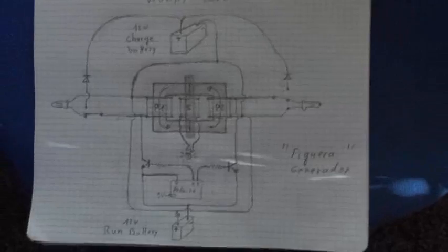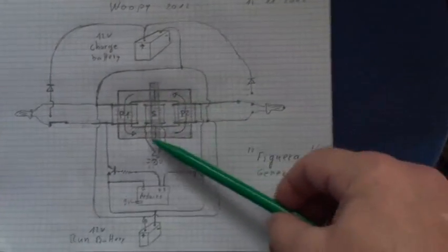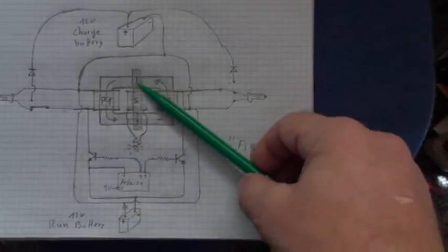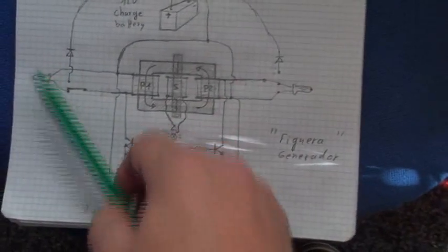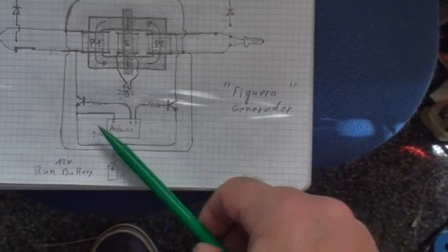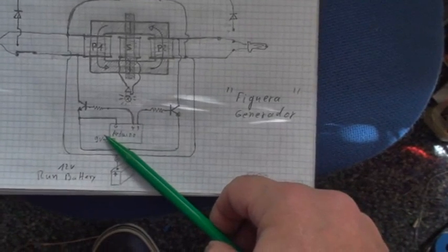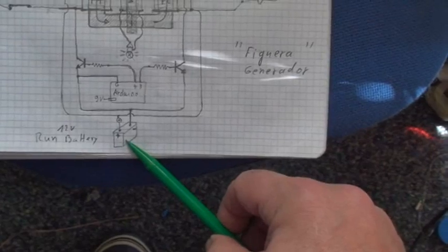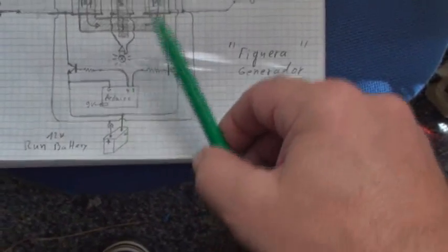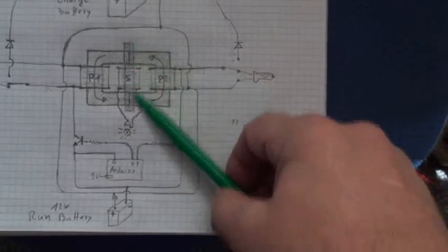So I decided to make this system here. This is the U-shape core connected together, two primaries here. At the end of the primaries I put two neon bulbs here. The Arduino connected to a nine volt battery to power the Arduino only, the two transistors here, the run battery, and in the middle here I put another iron laminated and the light.